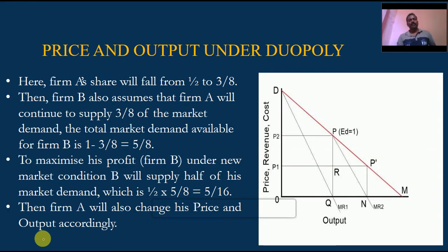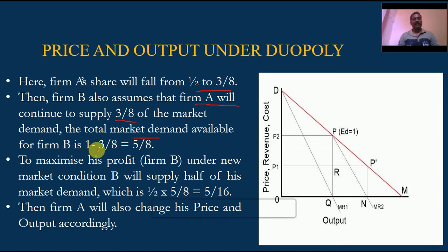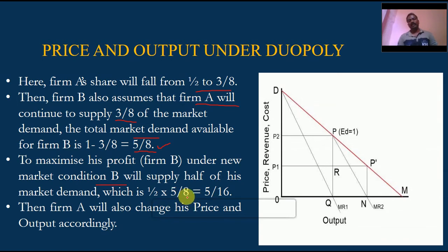So Firm A's market share falls from one-half to three-eighths. Firm B then assumes A will continue to supply three-eighths of the market. The market available for B equals 1 minus 3/8, which equals 5/8. To maximize profit, Firm B supplies half of its available market: half of 5/8 equals 5/16. Firm B will change its price and output accordingly.